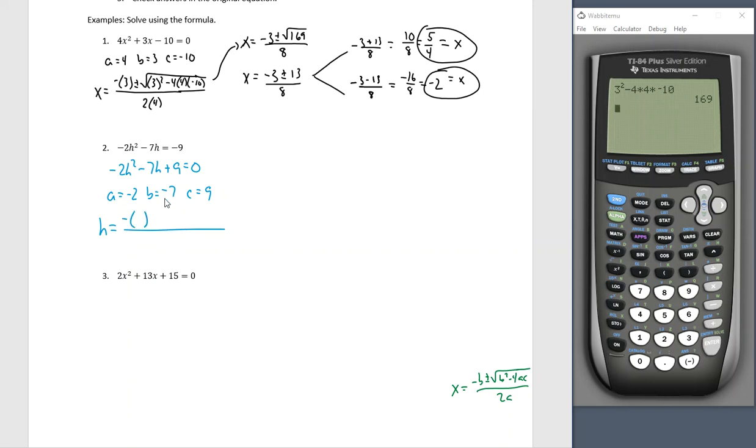I'll have negative b, so negative negative 7, plus or minus the square root of negative 7 squared minus 4 times negative 2 times 9, all over 2 times negative 2. We have h equals a negative negative is a positive 7, plus or minus—I'm going to use parentheses as I should have this first time—negative 7 squared minus 4 times negative 2 times 9.